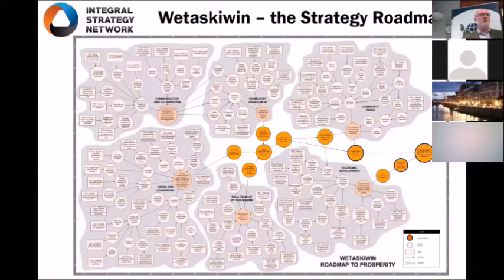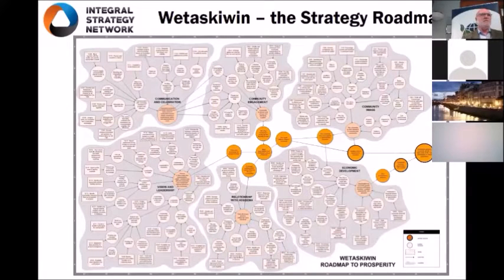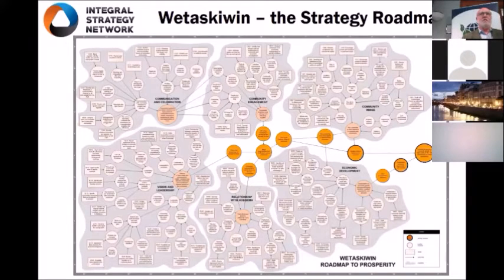Community engagement and community image were key capabilities because the community was in decay and very concerned about how they were perceived. As an economic development professional, you're competing with everybody else. The economic development focus — business development and growth of local companies, business investment attraction, and marketing their community assets to the bigger world — was probably most important. The children of Wetaskawin at that time, on graduation, were leaving town because they didn't believe there was opportunity in the community. I'm happy to say they've now turned that around.